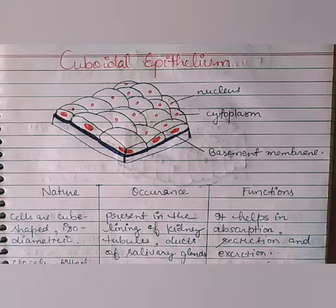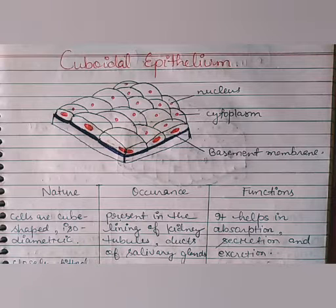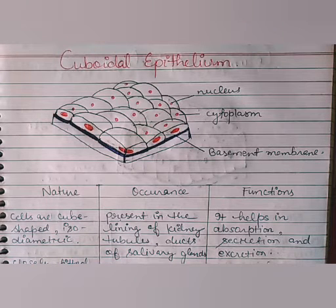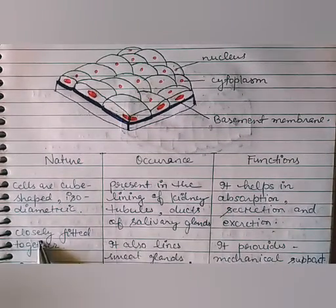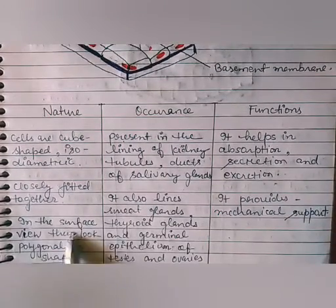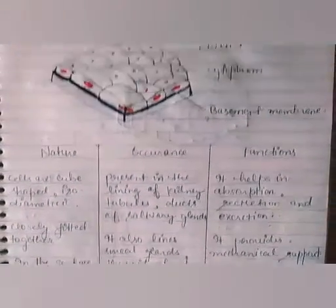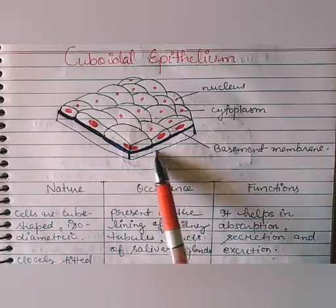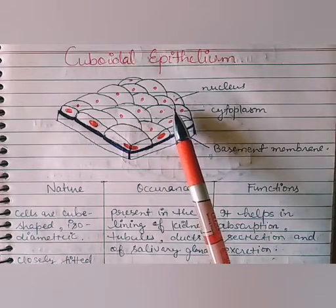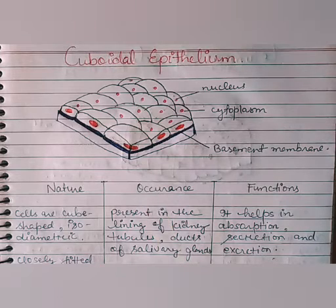The second kind of epithelial tissue is cuboidal epithelium. In cuboidal epithelium, the cells are cube-shaped and isodiametric — meaning their length and width are similar. Like squamous epithelium, they are also closely fitted together with no gap between the cells. In surface view, they look polygonal in shape, as you can see in the diagram.